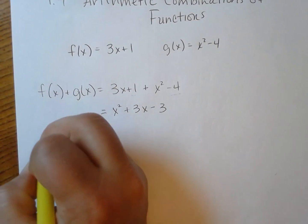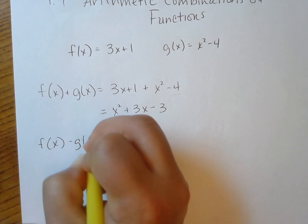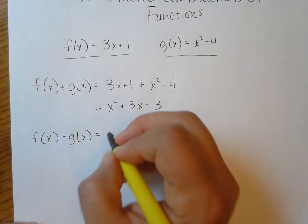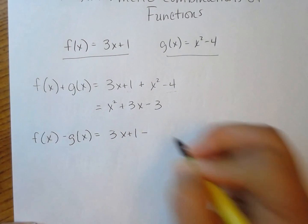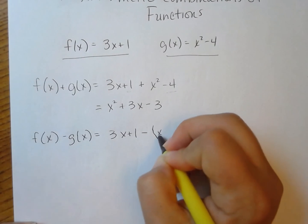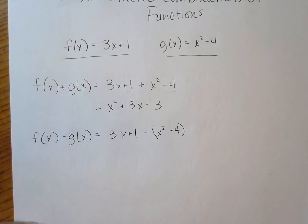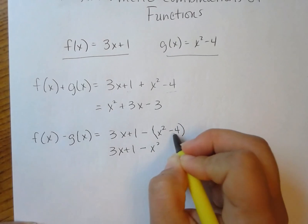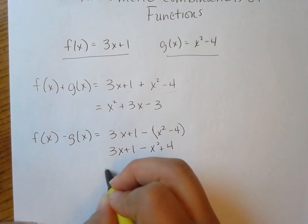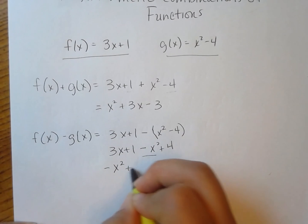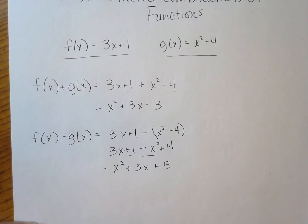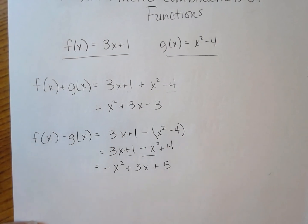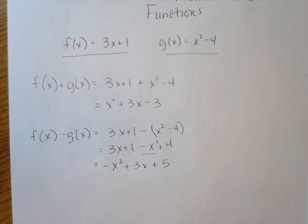That's what we call the sum. I can also subtract them. f(x) minus g(x), using the same functions, is 3x plus 1, and then minus — I always use parentheses when I have more than one term I'm subtracting — x² minus 4. I distribute my minus sign: I have 3x plus 1 minus x², and then minus minus is plus 4. Rewriting in order: negative x² plus 3x plus 5.